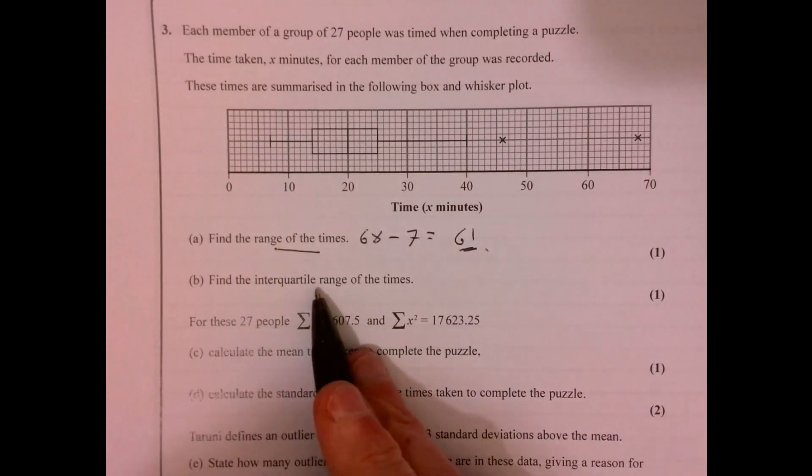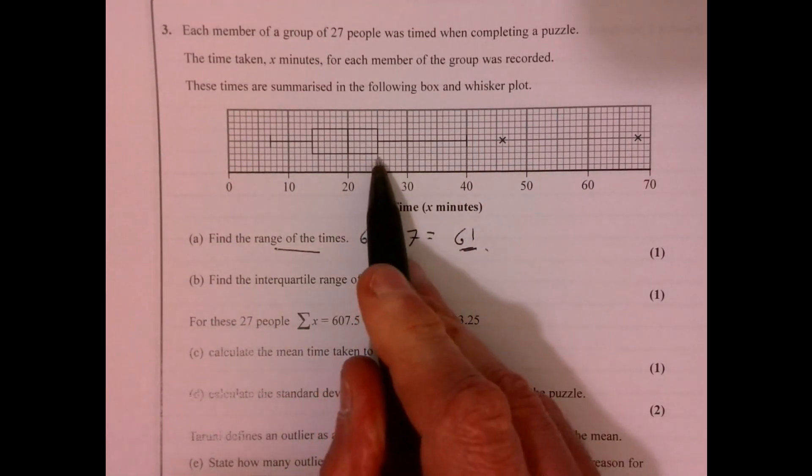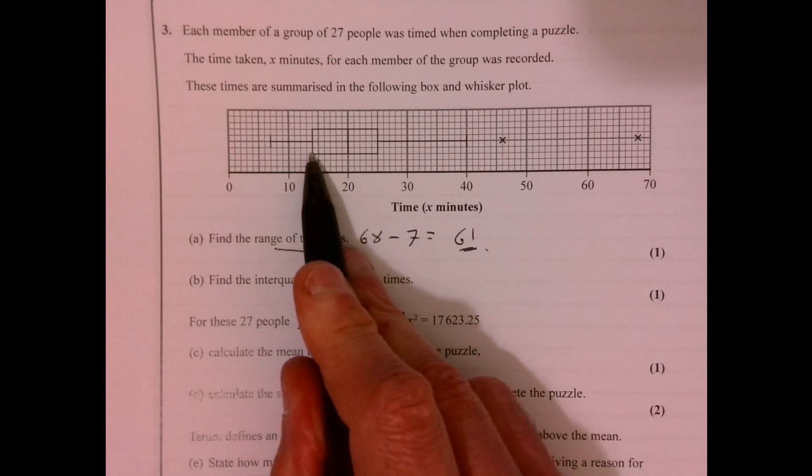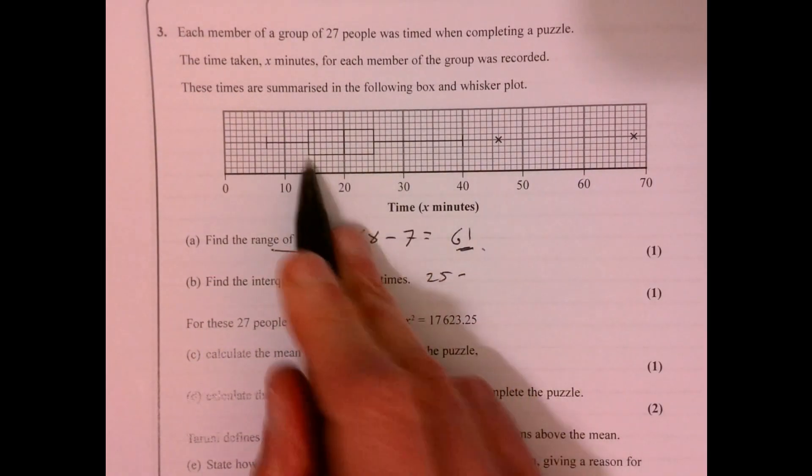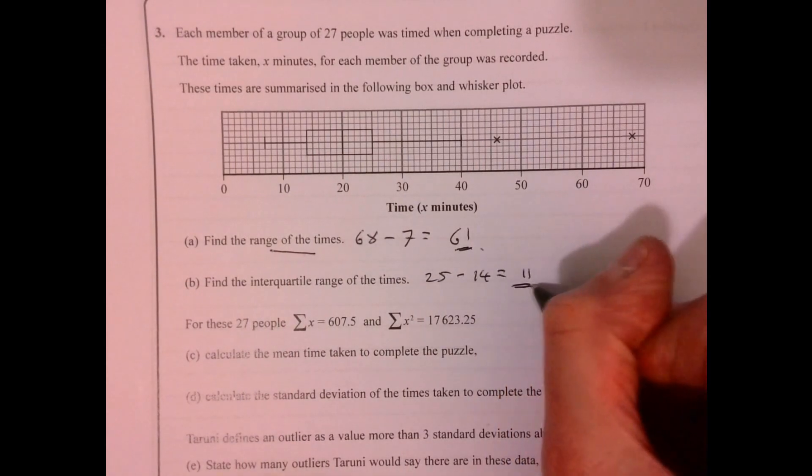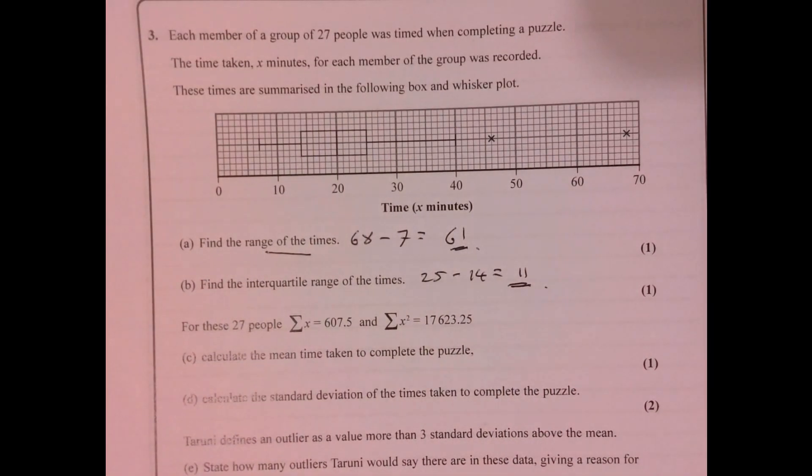Find the interquartile range of the time, so that's the upper quartile take away the lower quartile. So 25 take away 14. There we are, 11.